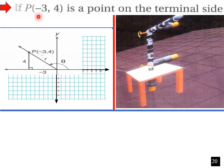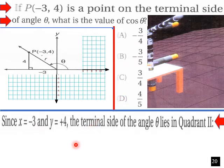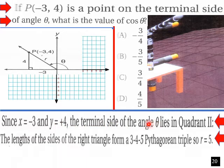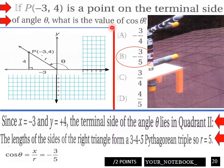If point (−3, 4) is a point on the terminal side of angle theta, what is the value of cosine theta? Since x is −3 and y is positive 4, the terminal side lies in quadrant 2. The sides of the right triangle form a 3-4-5 Pythagorean triple, so r equals 5. Therefore, cosine theta equals x over r equals −3 over 5.